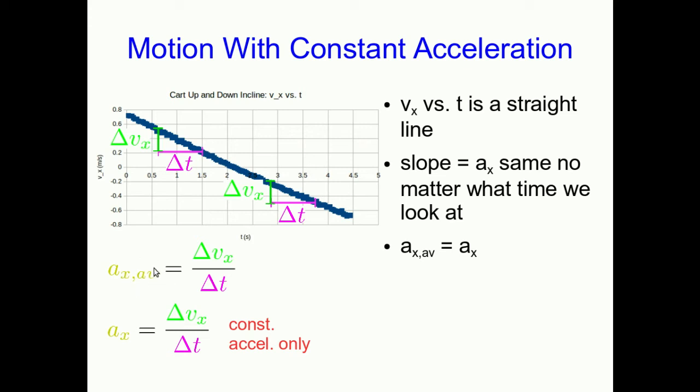So we've got for constant acceleration, where we can drop the average here, this ax is delta vx over delta t. Well, let's just rearrange that. And this is going to be a lot like another rearrangement of an equation I did a couple of lectures ago. So we'll remember that that delta vx is a final minus an initial, and so we'll just do that replacement and bring the initial over to the other side of the equation.